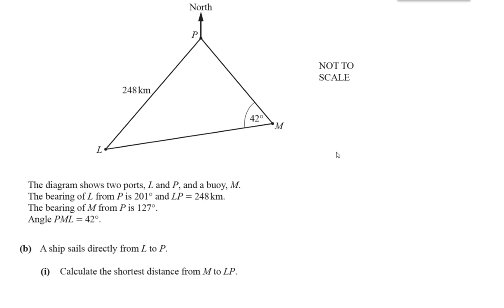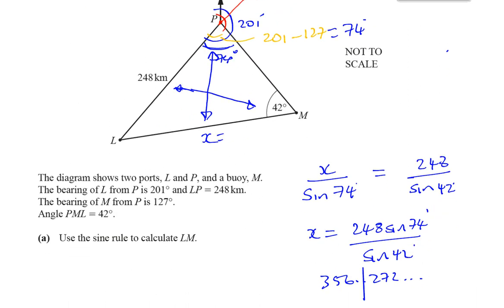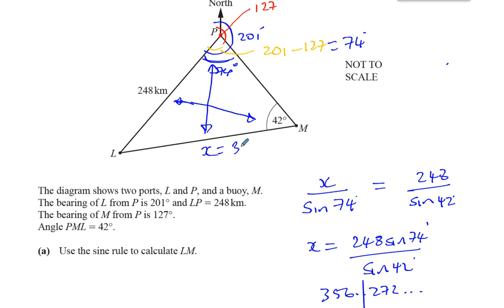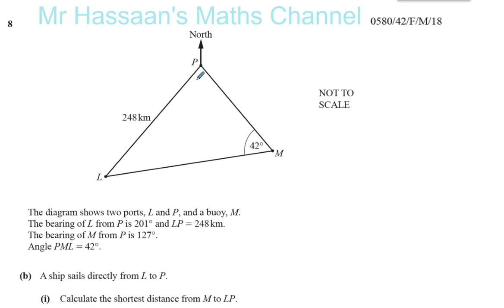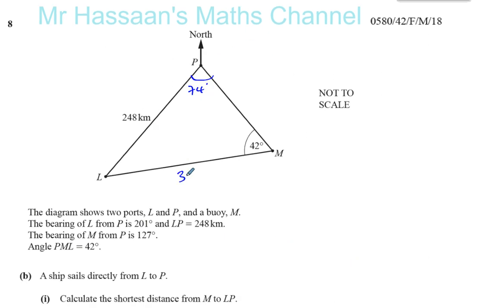So it says a ship sails directly from L to P, calculate the shortest distance from M to LP. What did we work out just now? We worked out that this length X was in its unrounded, more accurate form, 356.272. And we worked out that this angle was 74.